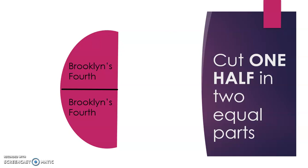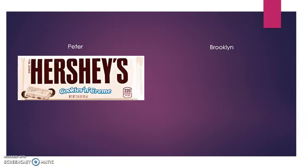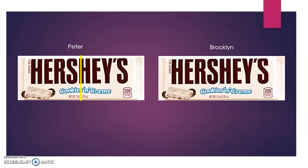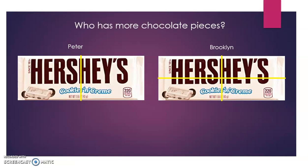Let's see if this is true with rectangles. Peter and Brooklyn are back again, but this time they're not eating cookies — they're eating Hershey cookies and cream bars. Peter broke his Hershey bar up like this, and Brooklyn broke hers up the same way she did her cookie, but like that. So who has more chocolate pieces?